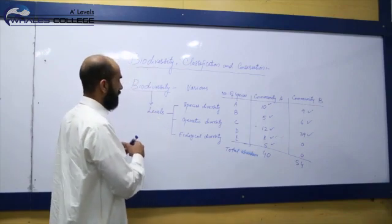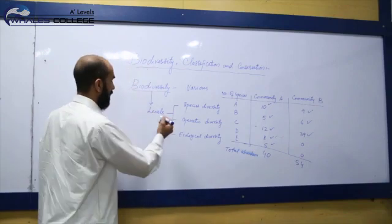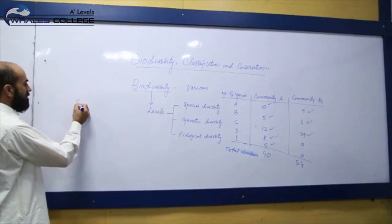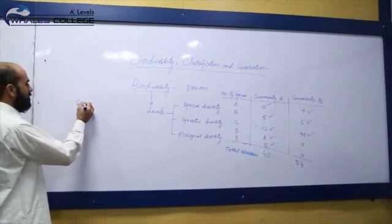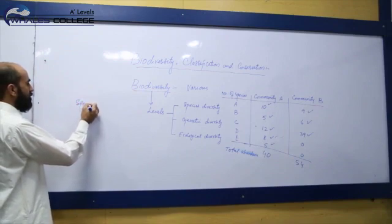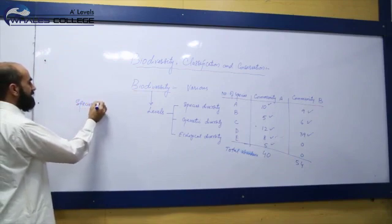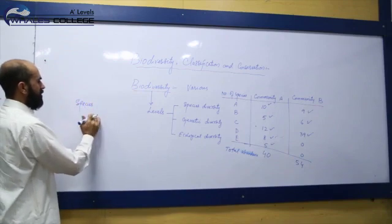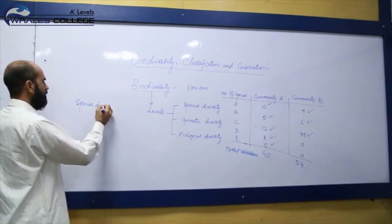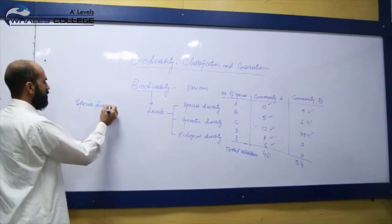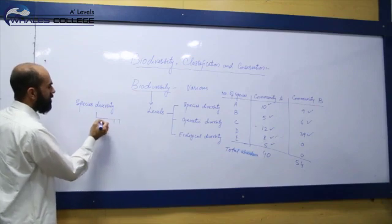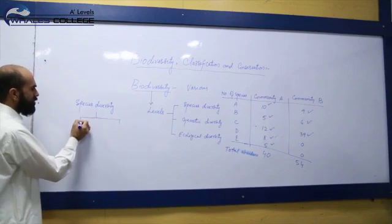Species diversity has two further features to consider: species richness and total abundance. These two components together define the species diversity of a community.